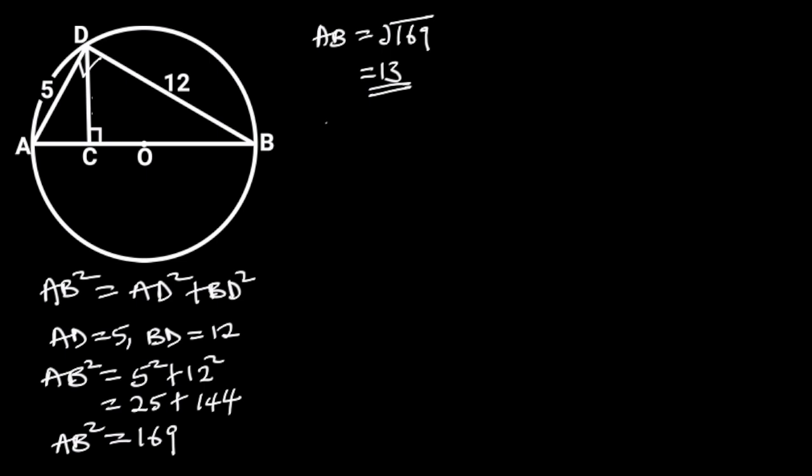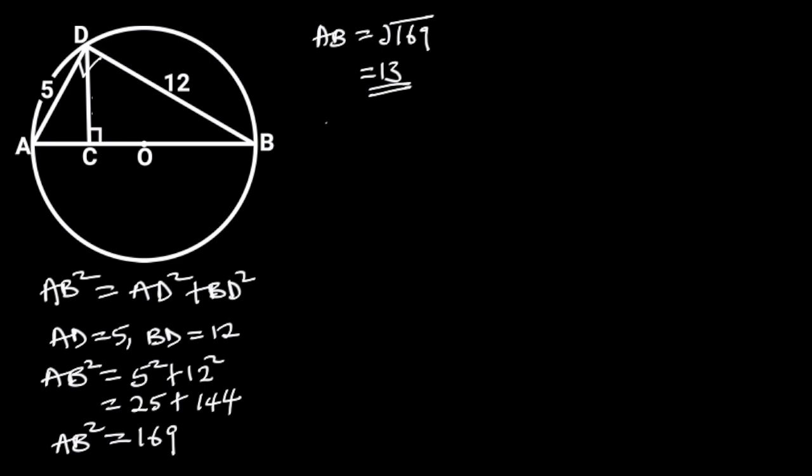Next, let's find CD. To do so, let's recall the inscribed similar right triangles theorem, which states that if an altitude is drawn from the right angle of any right triangle, then the two triangles formed are similar to the original triangle, and all three triangles are similar to each other. From triangle ABD, observe that CD is an altitude drawn from the right angle of triangle ABD.